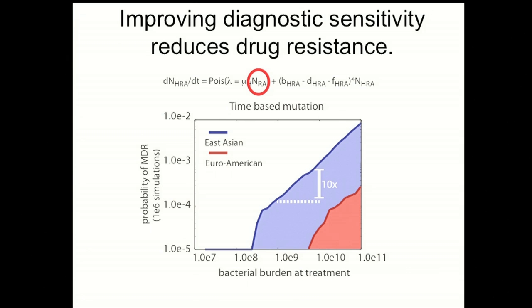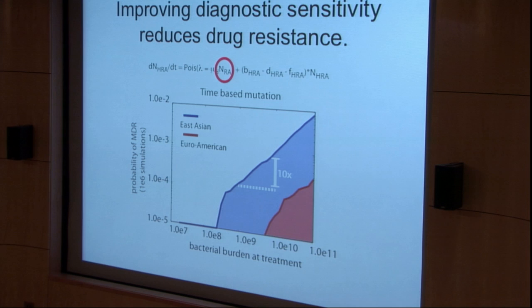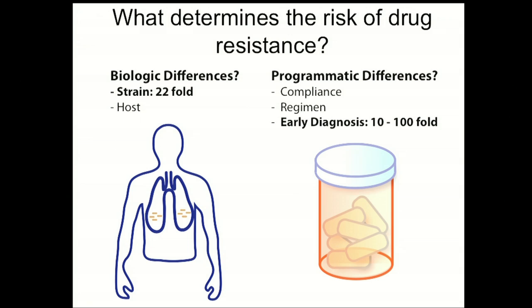The last takeaway is bacterial burden at treatment. As you move back along the x-axis, the probability of observing drug resistance decreases — for every order of magnitude reduction in bacterial burden, we get a concomitant order of magnitude reduction in the probability that the patient will be drug resistant. This is an excellent point for intervention: if we can improve diagnostic sensitivity, we may be able to improve drug resistance outcomes. Altogether this brings us back full circle — we now know that there are strain-based differences in mutation explaining large differences in drug resistance, and programmatic issues such as diagnostic sensitivity that we can address to reduce the drug-resistant burden.